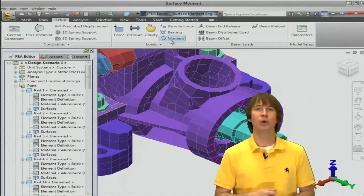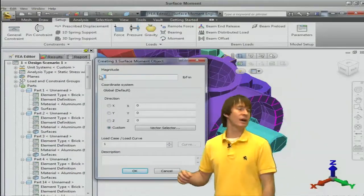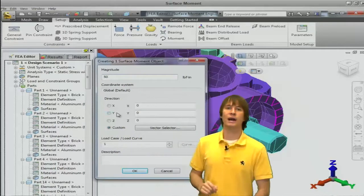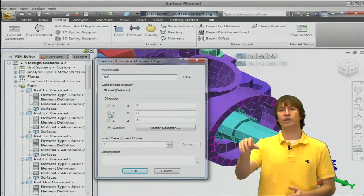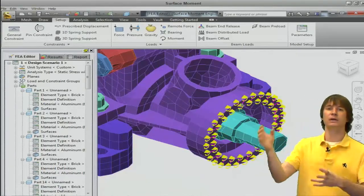...and choose moment. You see the option there and our screen pops up. So again, we have to define our magnitude, which we'll type in as 50, and then our axis. We can see that Y is the axis that we would be torquing around. So let's click the radio button and then click OK. We can now see that we have all of the little moment arrows on that surface.